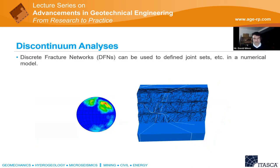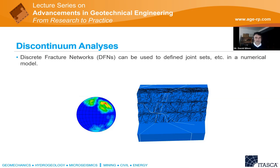We can also use discrete fracture networks to define joint sets and explicitly include thousands of joints in a numerical model. Once you go to that level of complexity, the models become very large, which restricts the size of the slope you can analyze if you're trying to include the actual jointing as it is.